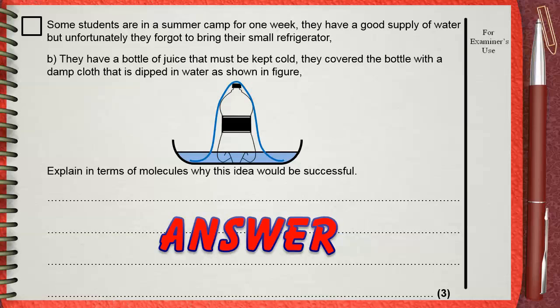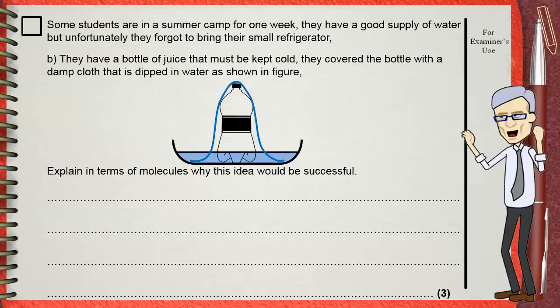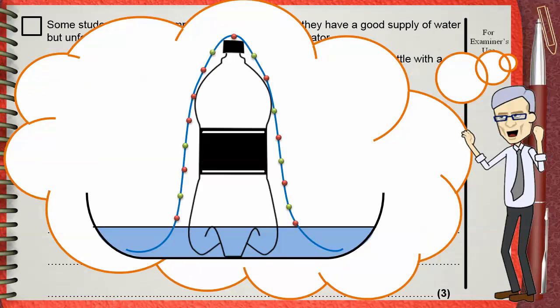This is what they think about. They have a bottle of juice. They need to keep it cold. They covered the bottle with a damp cloth that is dipped in water. These circles represent water molecules that are on the cloth.